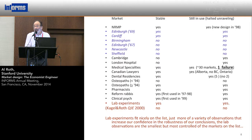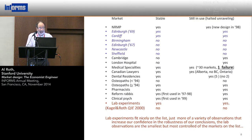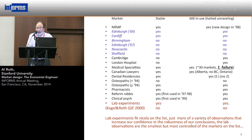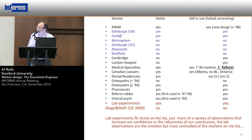When you look at labor clearinghouses around the world, there's a column called 'stable' — if there's a yes there, it means the system produces a stable match with respect to stated preferences. Then I ask whether it's still in use, whether it succeeded in organizing the market. It's a small data set, but loosely speaking, a yes in the first column is associated with a yes in the second. One of the tools you can bring to bear is experimental methods — in the laboratory, we can focus just on how the algorithms work.